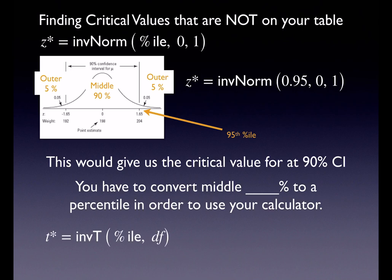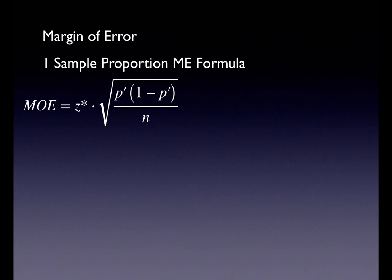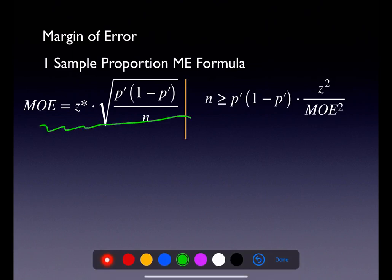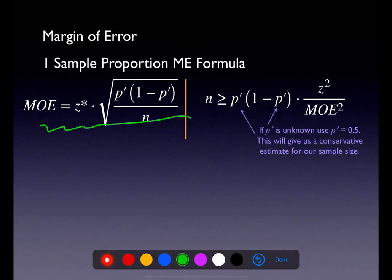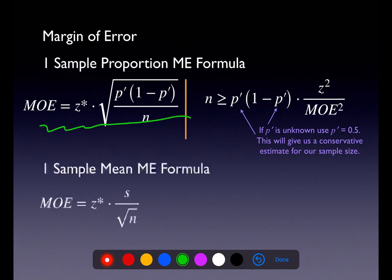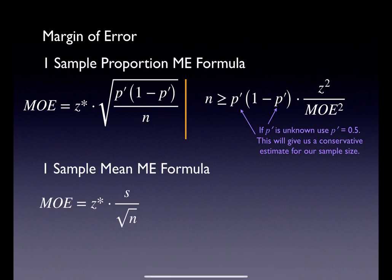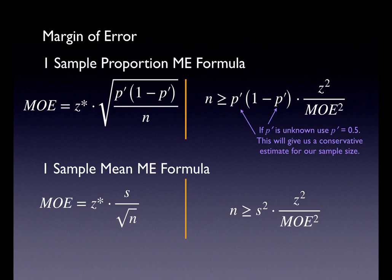For margin of error problems in proportion land, I recommend using the inequality approach. If the sample proportion is unknown, we use 50% — it's halfway between 0% and 100% and gives a conservative estimate for sample size, meaning it's probably a little larger than needed but keeps you on the safe side. In mean land, this will be the one time we use Z-star critical values, because not every calculator has an inverse T function. The inequality approach goes quite a bit faster.